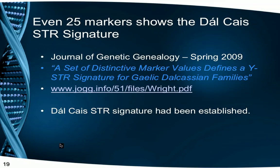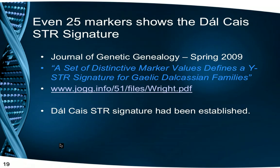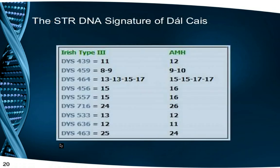As we have seen, the first 25 markers clearly show the signature of the Dalcassian, and this had been known from early 2006. So I wrote a paper to that effect: A Set of Distinctive Marker Values Defines a Y-STR Signature for Gaelic Dalcassian Families. This was published by the Journal of Genetic Genealogy in 2009. So the Dalcassian STR signature had been established.